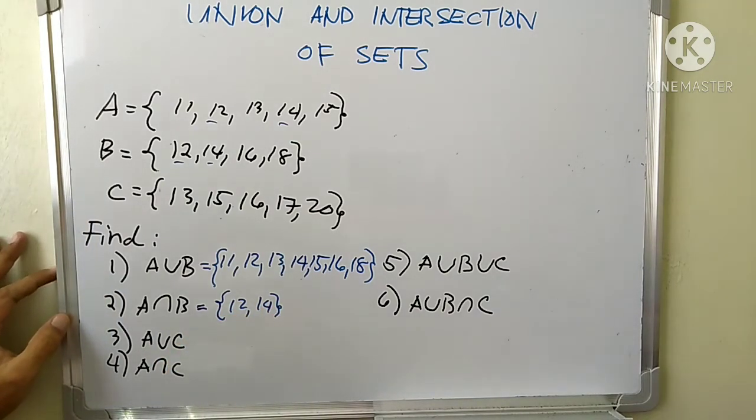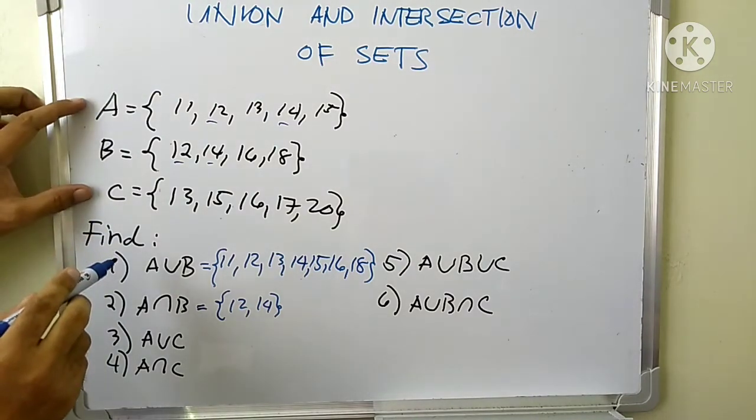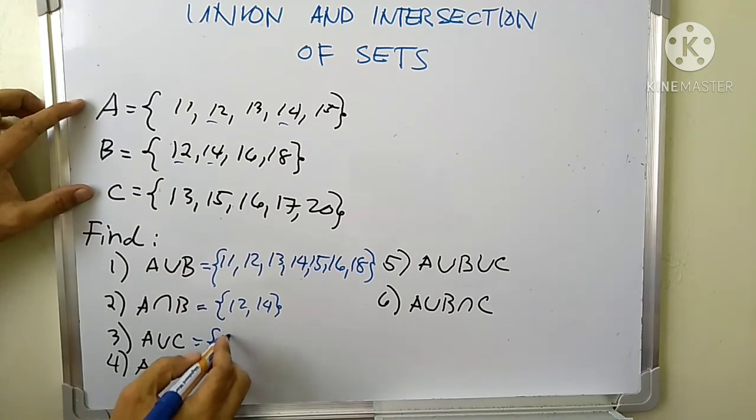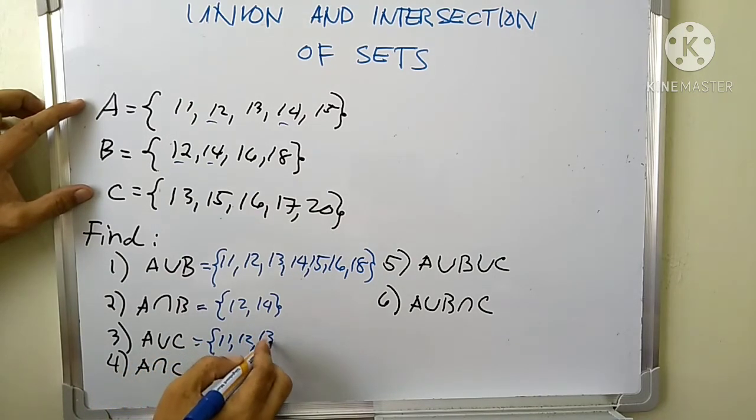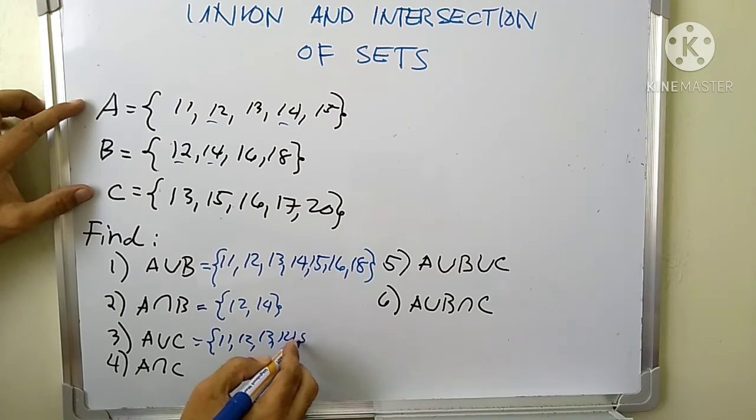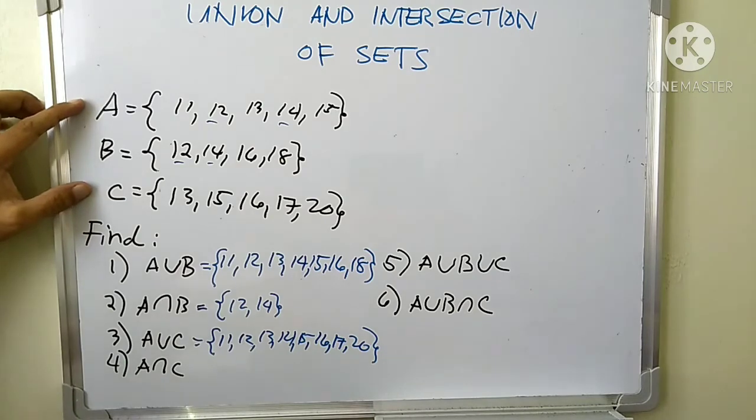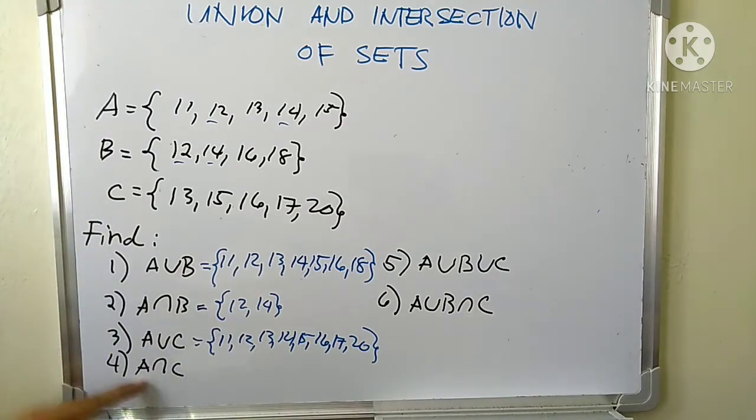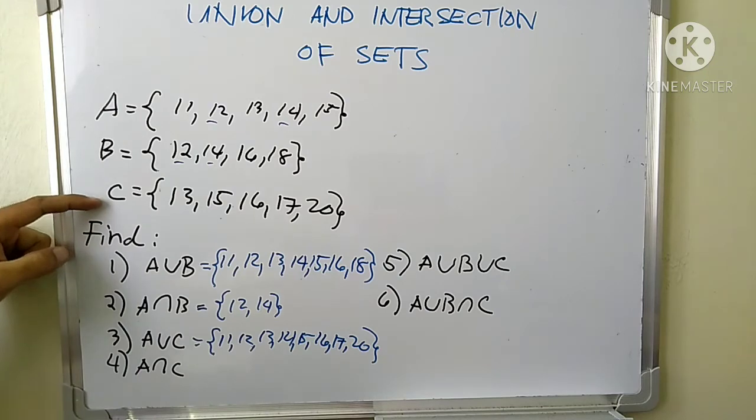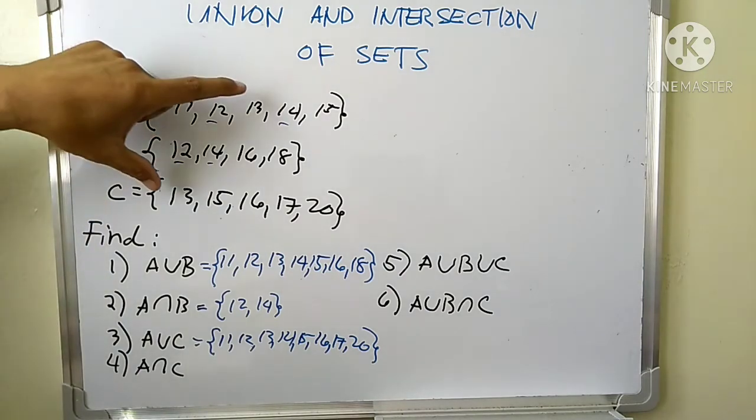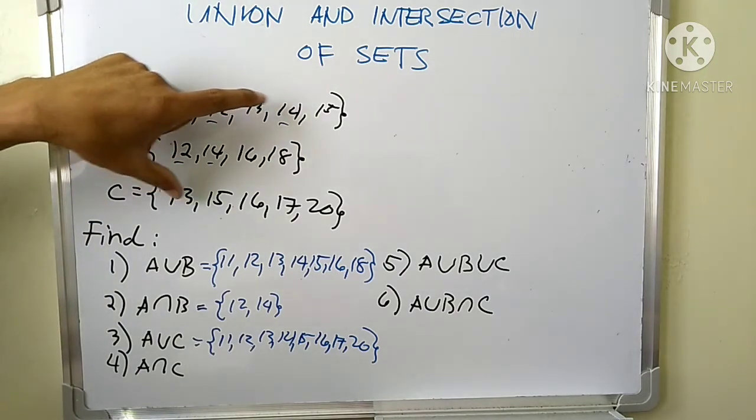What is the union of A and C? Look at this. We have 11, 12, 13, 14, 15, then 16, 17, and 20. What is the intersection of A and C? What are those same elements? We have 13 and 15.